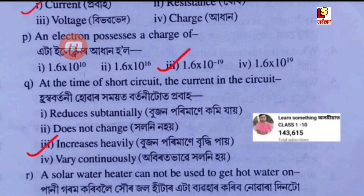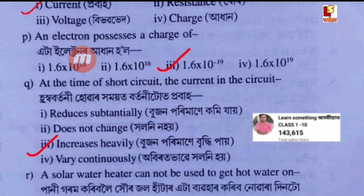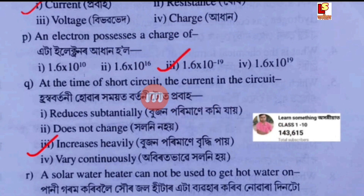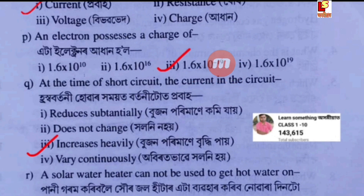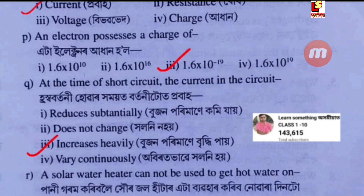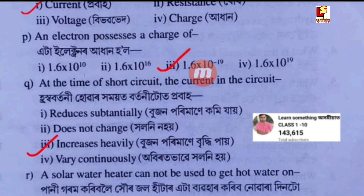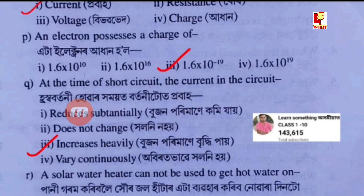Next question: the charge of an electron is — Option A: 1.6 × 10⁻¹⁶. Option B: 1.6 × 10⁻¹⁹. Option C: 1.6 × 10⁻¹⁹. Option D: 1.6 × 10⁻¹⁹. The charge of an electron is 1.6 × 10⁻¹⁹ coulombs.